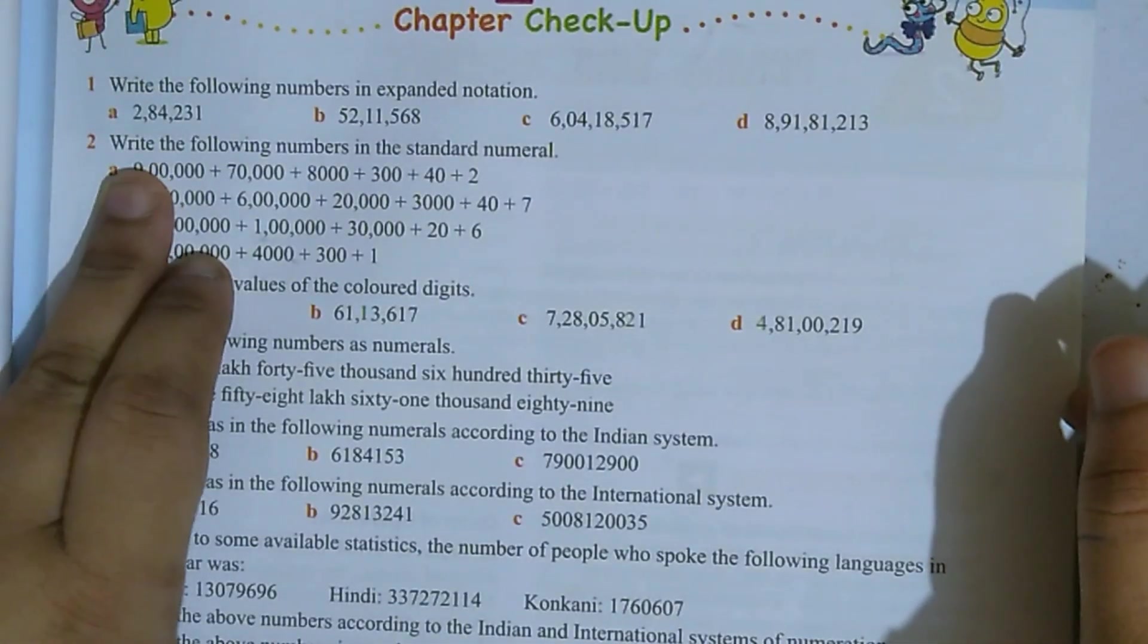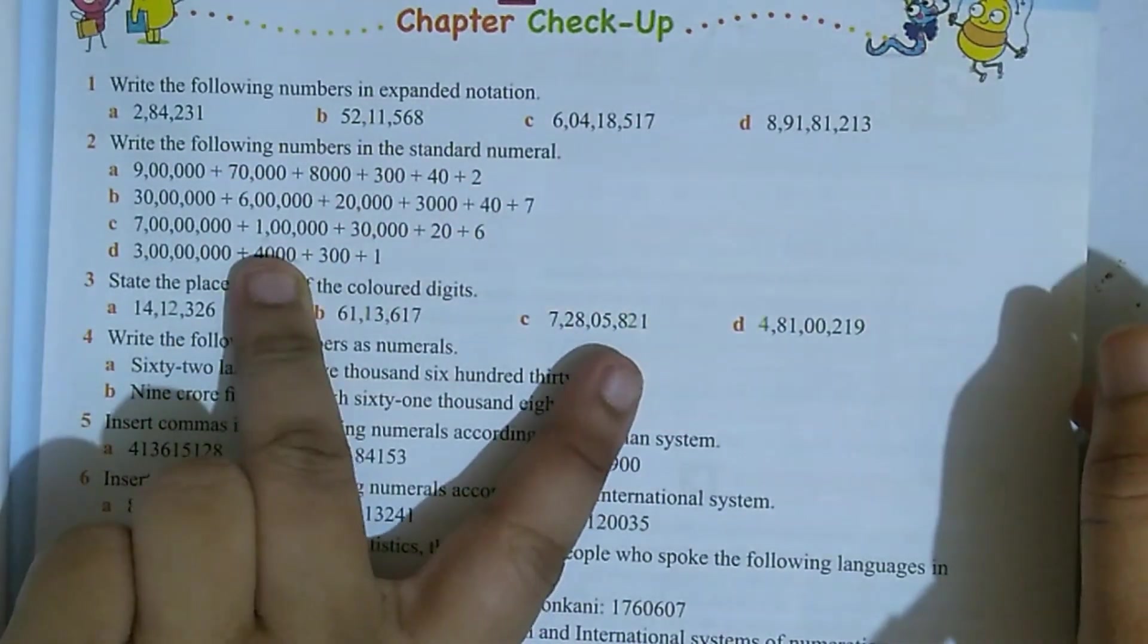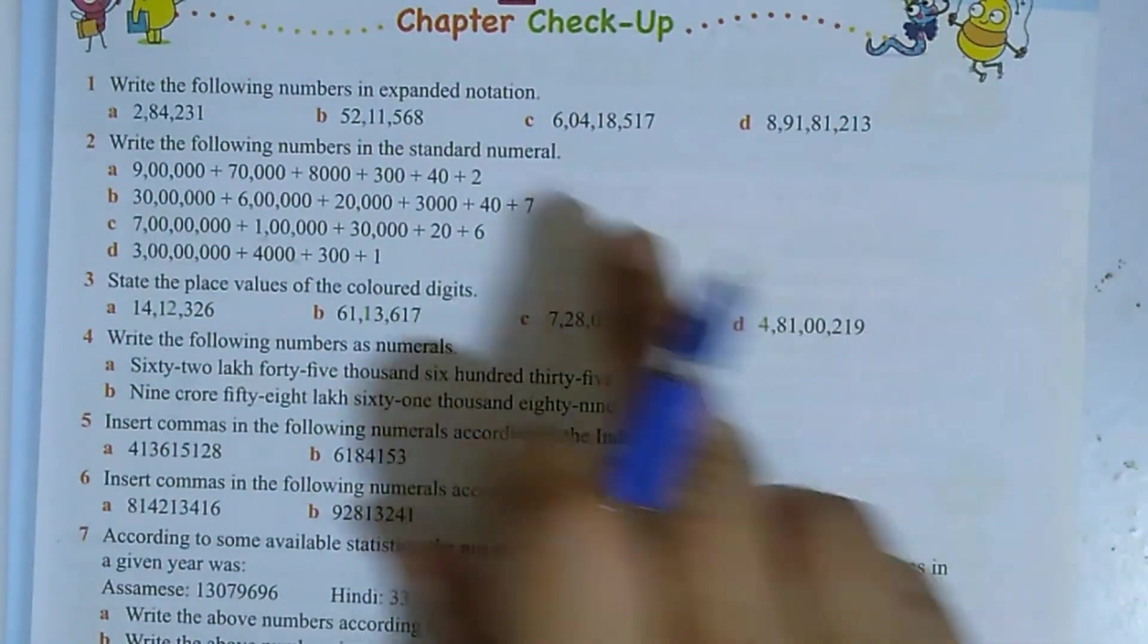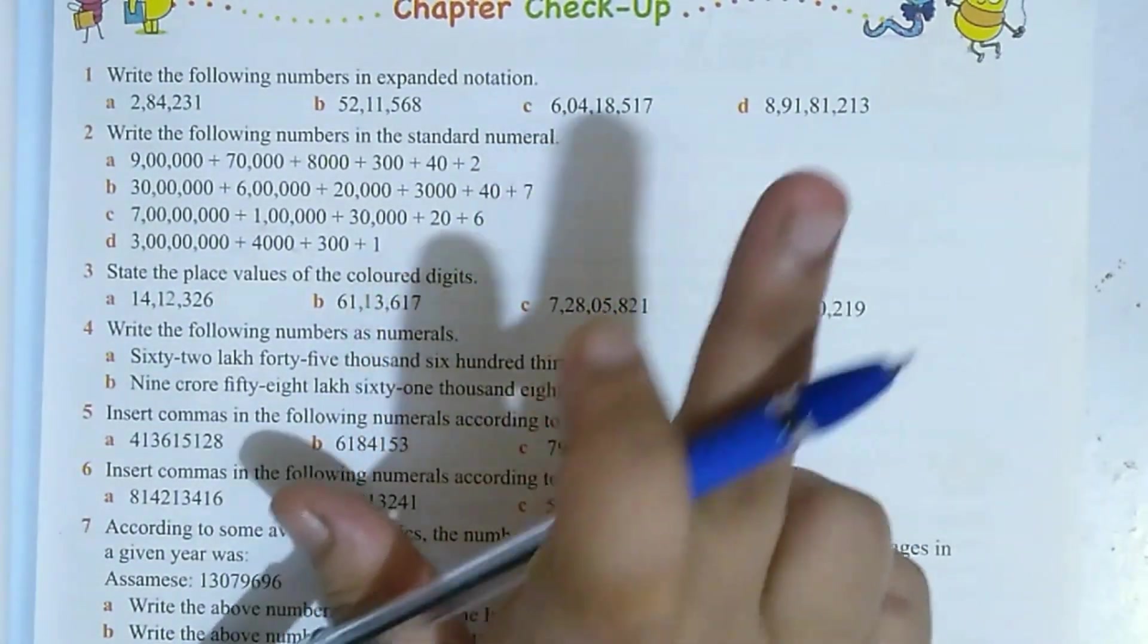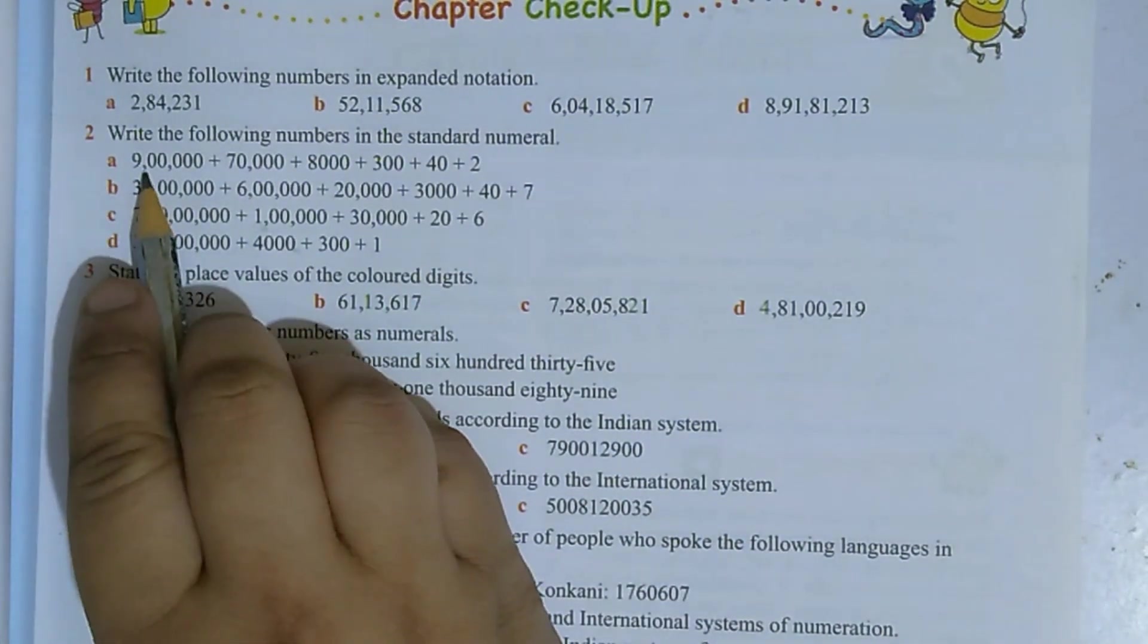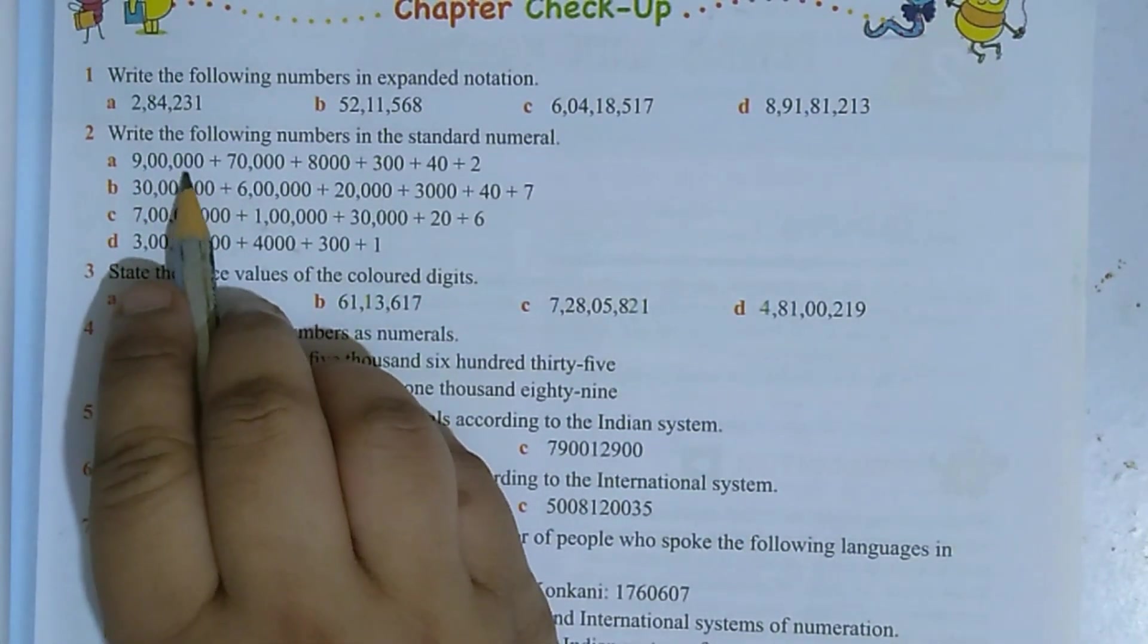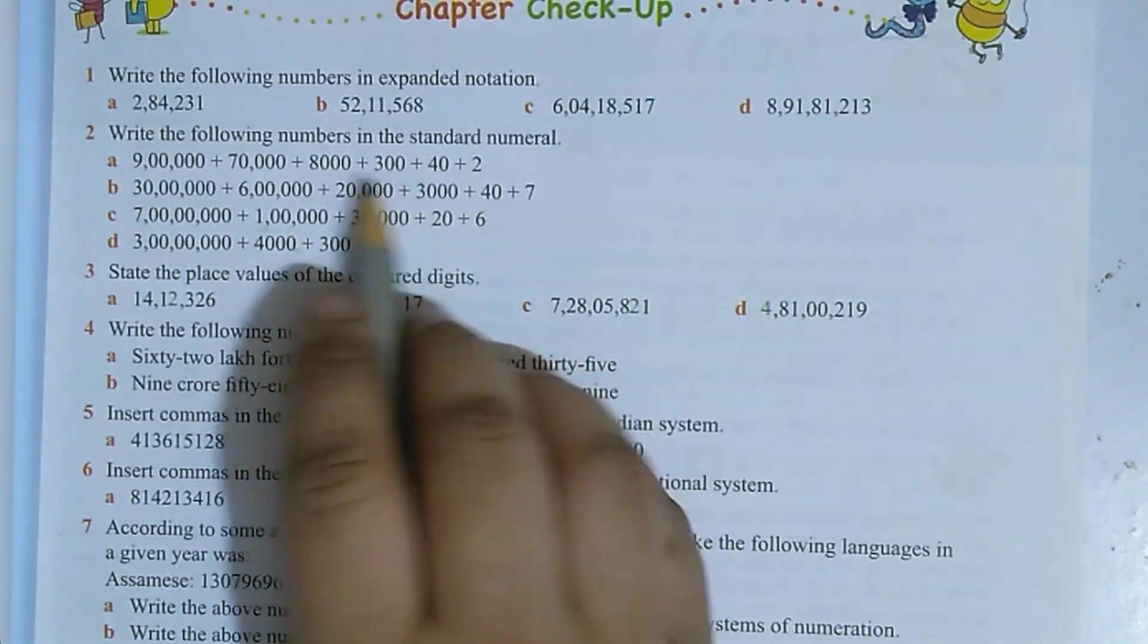Next, question number 2: Write the following numbers in standard numerals, means you have to write in standard form. So here is a place for writing, so I will write here but you should write in your notebook properly. First count the zeros: 1, 2, 3, 4, 5 zeros, then 4 zeros, 3 zeros, 2 zeros, 1 zero.